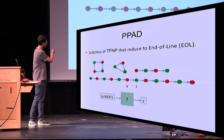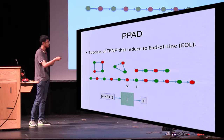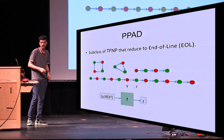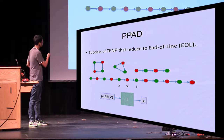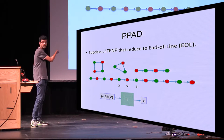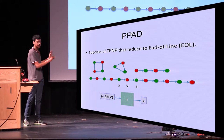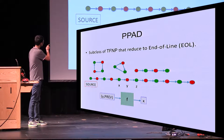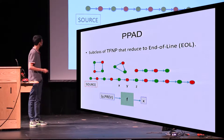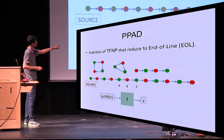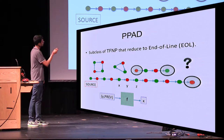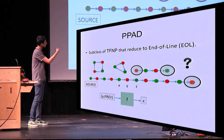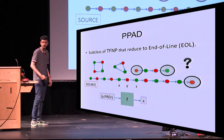This large graph is succinctly described by a function f. Given a node y and a special symbol 'next,' it gives the next node — the out-neighbor of y, the successor. Similarly, given y and a special symbol 'previous,' it gives the previous node x. We are also given a source node with in-degree 0 and out-degree 1. The goal is, given the source and the succinctly describable function f, to find the end of the line — either another source or a sink. Such a node is guaranteed to exist by a parity argument.